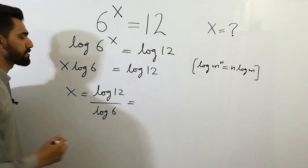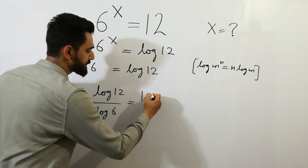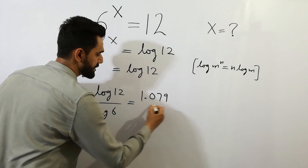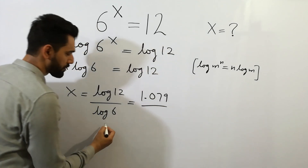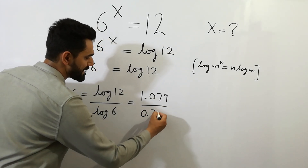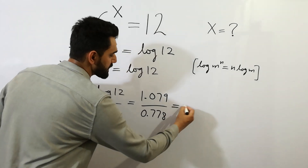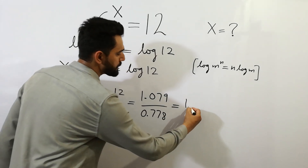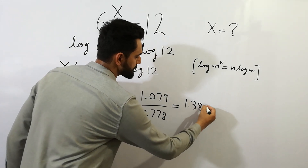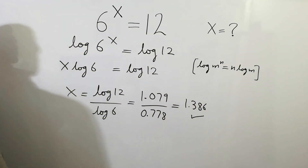Log 12 is equal to 1.079, and log 6 is equal to 0.078, we get 1.386. That's our right answer.